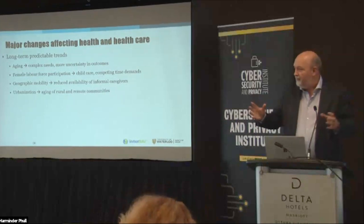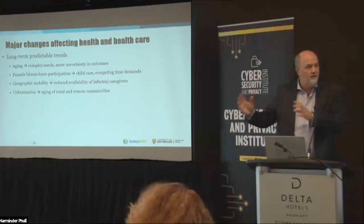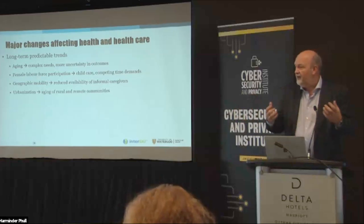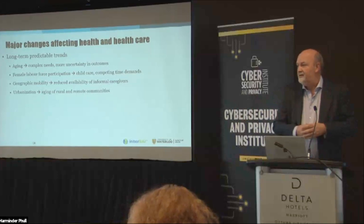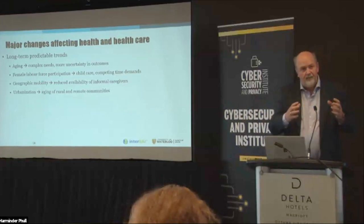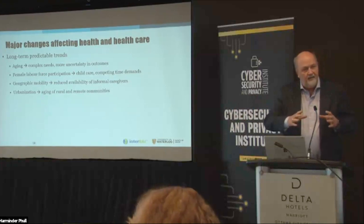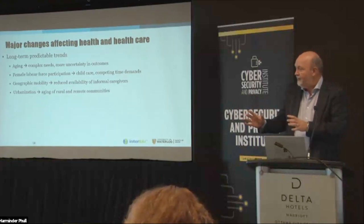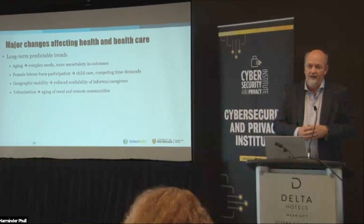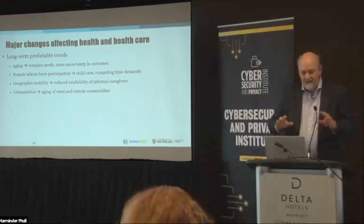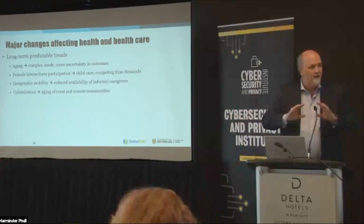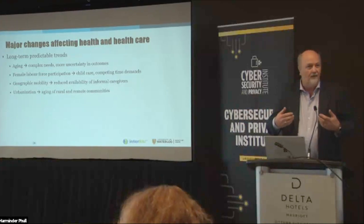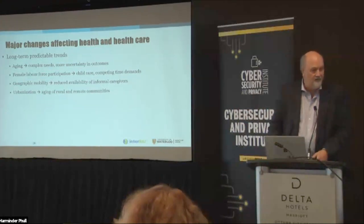Geographic mobility is another factor — people are moving around more, and when your kids move away to another part of the country, even if it's a couple of hours away, and you're an older person in need of informal support, that changes your access to support. Trends of urbanization mean that the places people are moving out of age rapidly and have great needs that may not be easily met in those regions. But all of these are trends that happen over decades, and we've been working on them and haven't particularly done well in solving all of them.